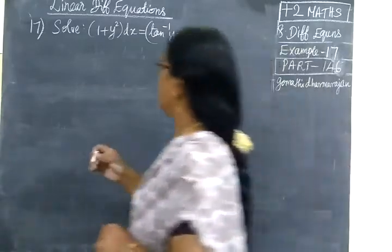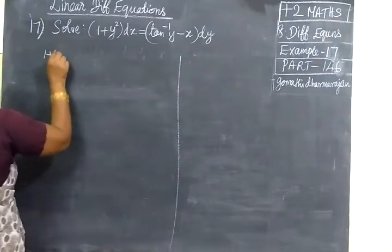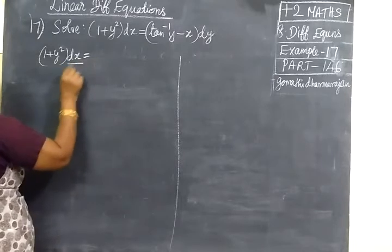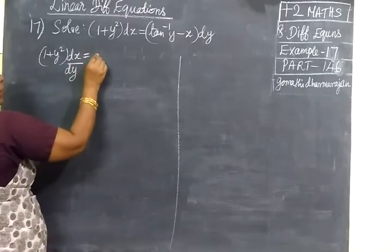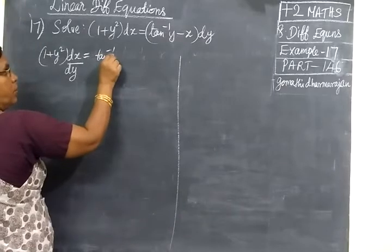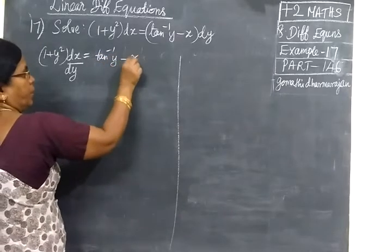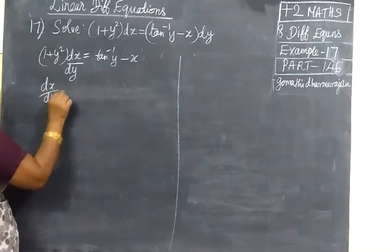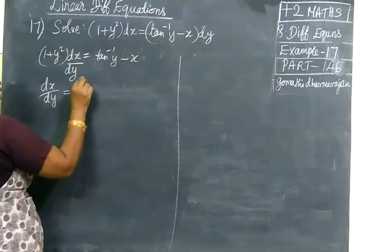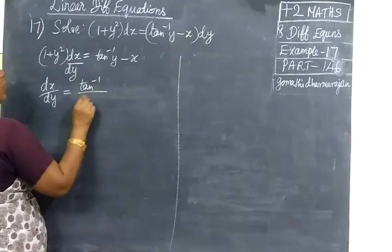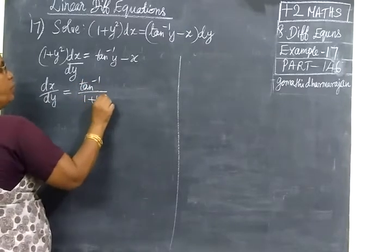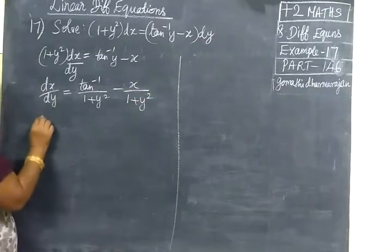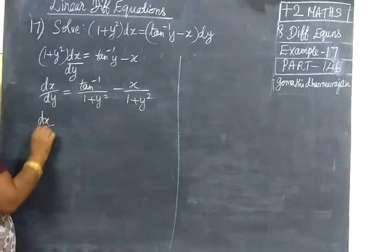So now we have: 1 plus y squared dx equals tan inverse y minus x, dy. Divide everything by 1 plus y squared. So we get: tan inverse y divided by (1 plus y squared) minus x divided by (1 plus y squared).